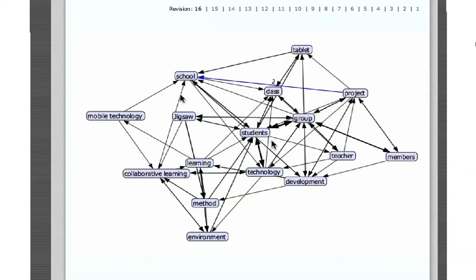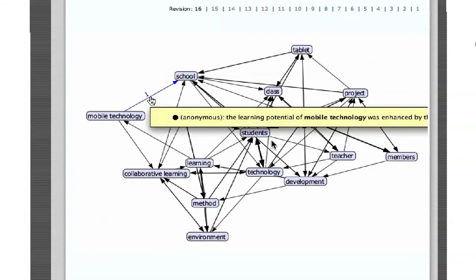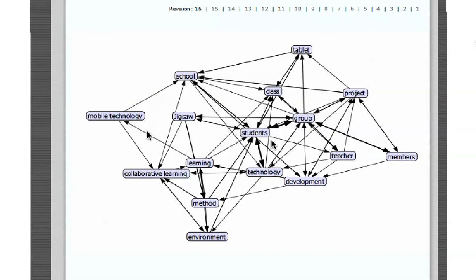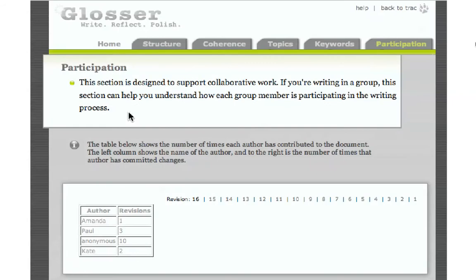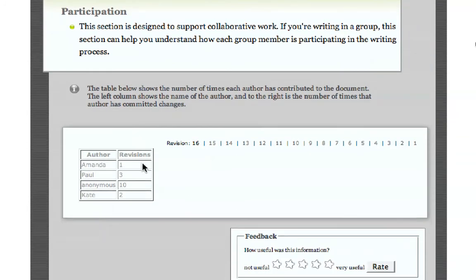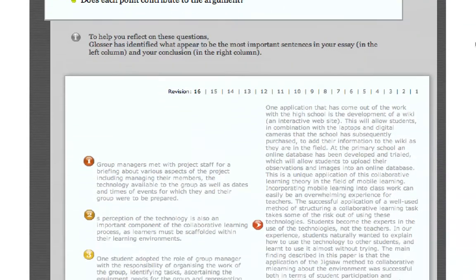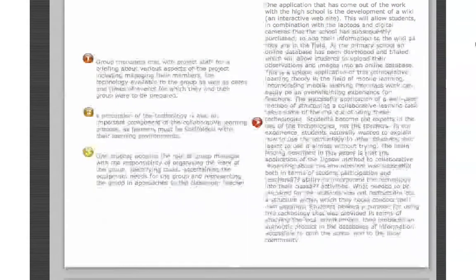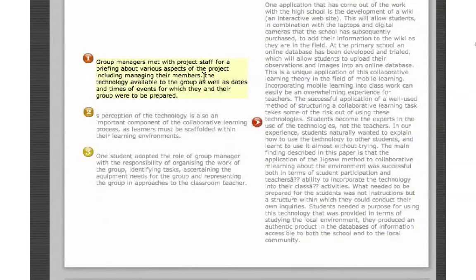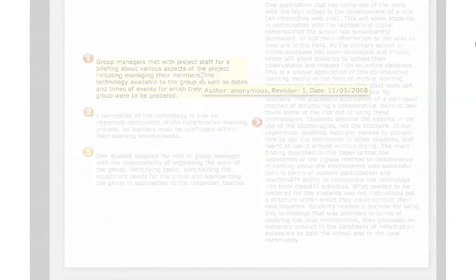You can rearrange your map for a different view, or roll over a relationship line to see the specific sentences that link these two terms together. Among the ways in which Glosser supports collaborative writing is in the participation section. Here you can see how many times each author has contributed to the essay. In the other sections of Glosser, hover over any paragraph to see who made changes to it last.